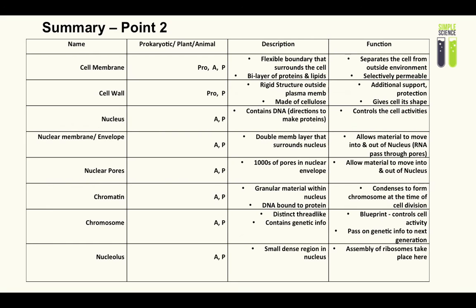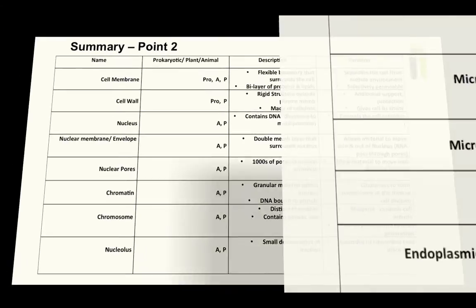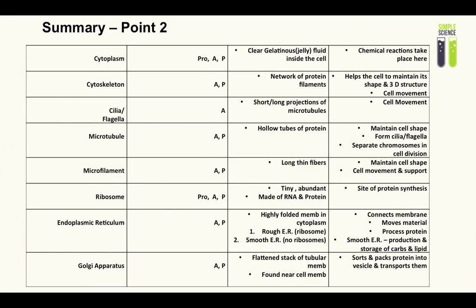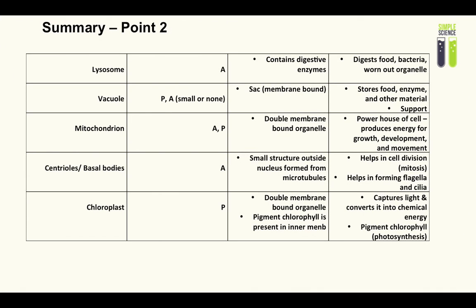Moving on to summary point two, I'll give you a second to screenshot each slide. That is summary point two. It basically lists all the organelles which we have discussed and tells you whether it's in an animal or plant cell or in a prokaryotic cell. It gives you the function and a description. I hope you found this video helpful. If you did, please let us know down below. If you have any questions, please comment down below; we'll do our best to answer your questions. Thank you so much for watching!